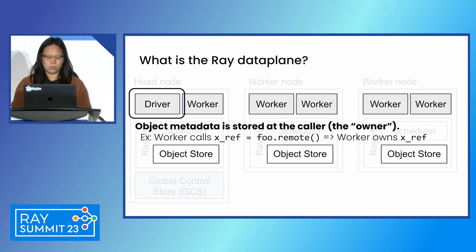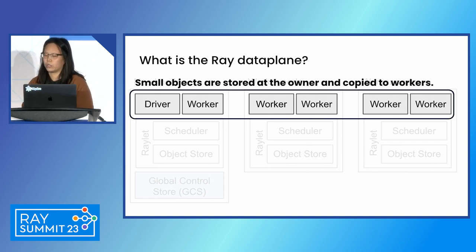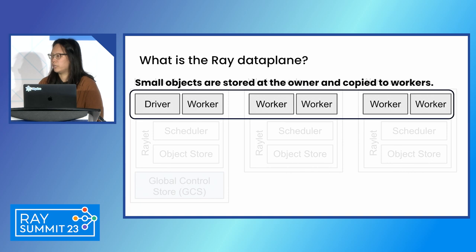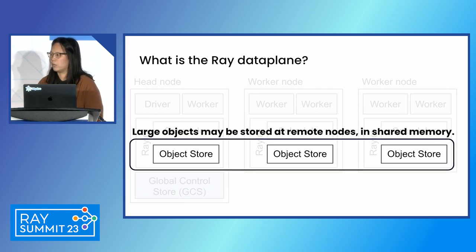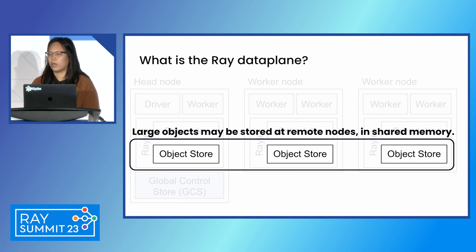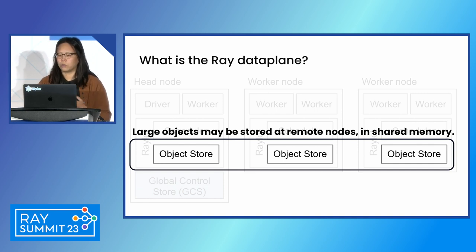For the actual object data, we have two different ways of storing it. For very small objects, which are quick to copy, we actually just store them directly at the owner and copy them between workers — this is like using an RPC library like gRPC. For large objects, we have this additional optimization of a shared memory object store. Even if one Python process has an object ref, the actual value might live on a completely different node. The main benefit is that you get a distributed memory abstraction and can also share the same copy of data as long as you're on the same node.